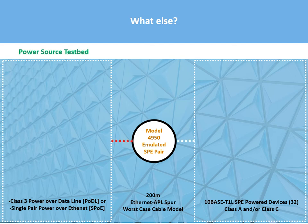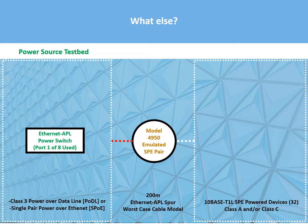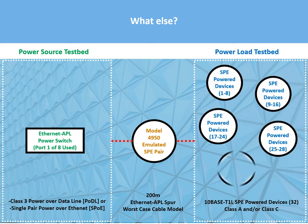On the power source testbed side, we have an Ethernet APL power switch where port 1 of 8 is being used. On the power load testbed side, we have 32 SPE powered devices. In the middle, we have the model 4950 emulating the SPE pair at 200 meters.